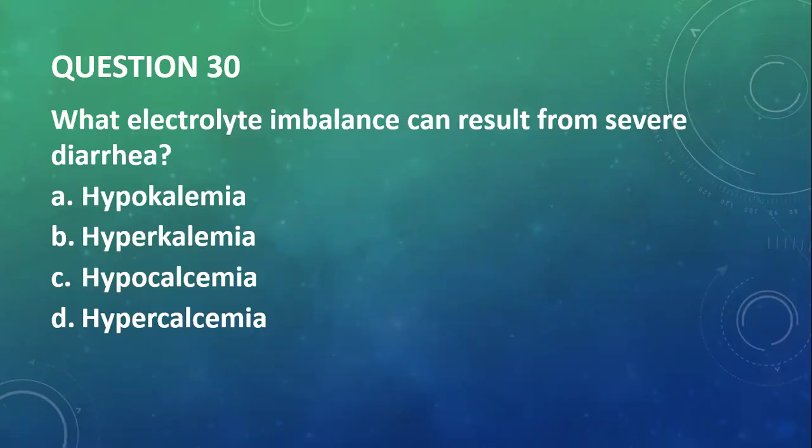Question 30: What electrolyte imbalance can result from severe diarrhea? We have hypokalemia—which is low potassium levels, hyperkalemia—high potassium levels, hypocalcemia, and hypercalcemia. Should I allow you to answer this one by yourself? If you said hypokalemia you are right, because in diarrhea we lose a lot of potassium-rich fluid from the intestines. We also lose a lot of sodium and bicarbonate, but that which is highly affected would be potassium. And that is the only type of acidosis where you have low potassium levels.